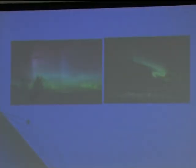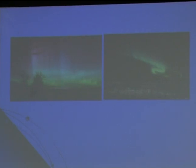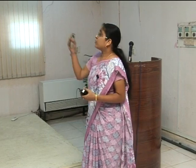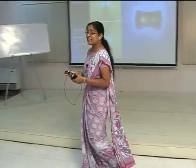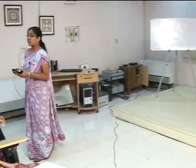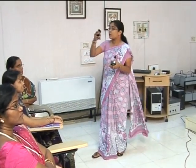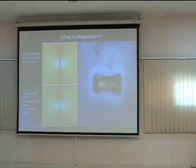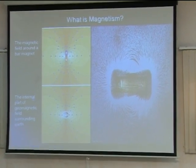Now I am showing you auroras. Let us study about magnetism — what is a magnet and how the magnetic field lines behave. Earth behaves like a large magnet, and the magnetic field lines will move from north to south, the same as in a regular magnet.